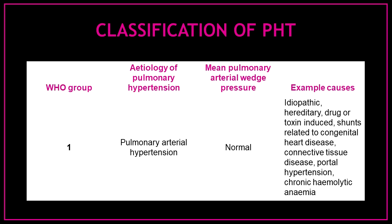Pulmonary hypertension can be classified into five groups. The first group are those patients with pulmonary hypertension and a normal mean pulmonary arterial wedge pressure. Some of the causes for this type of hypertension could be idiopathic, hereditary, drug or toxin-induced, shunts related to congenital heart disease, connective tissue disease, portal hypertension, or chronic hemolytic anemia.